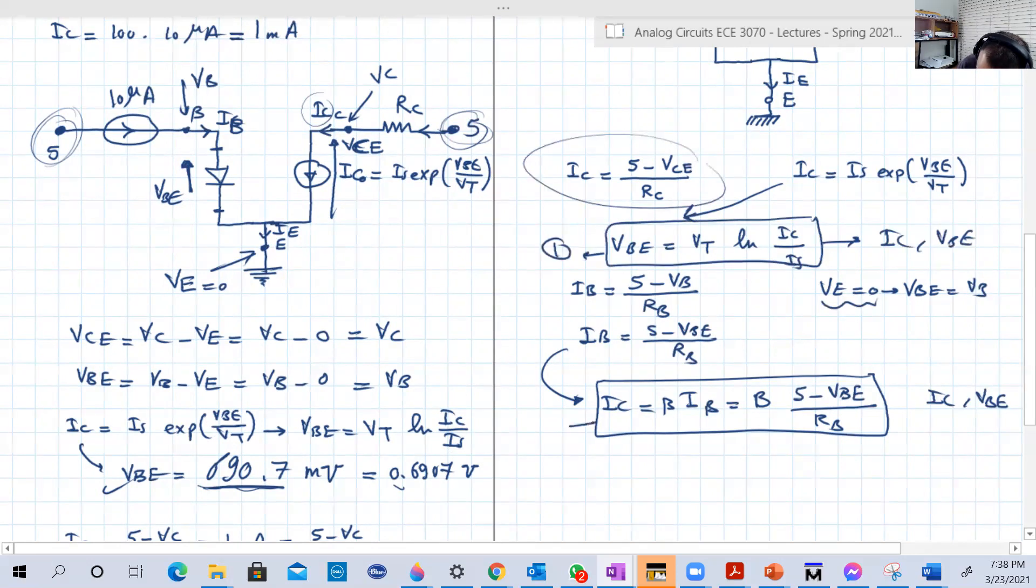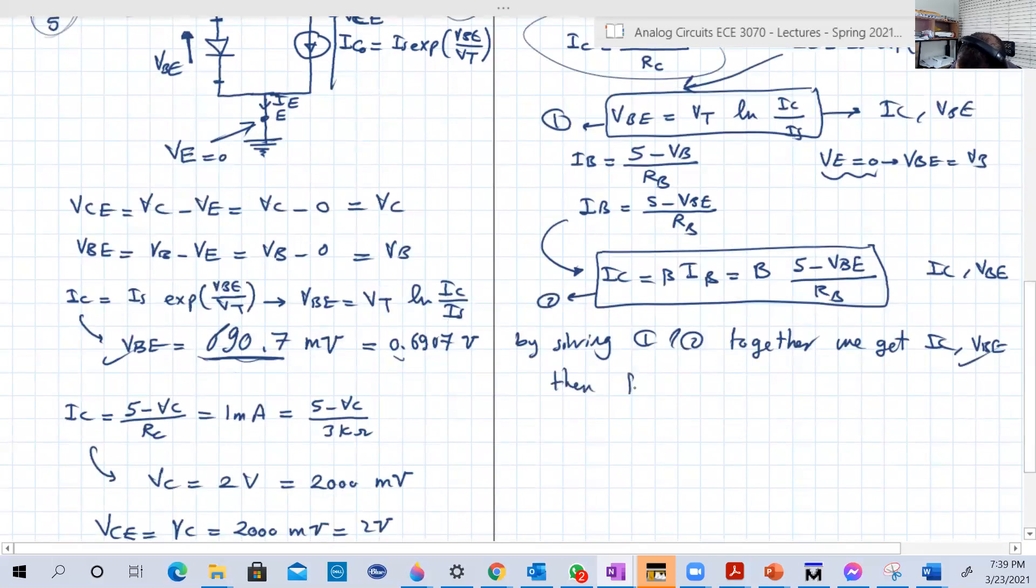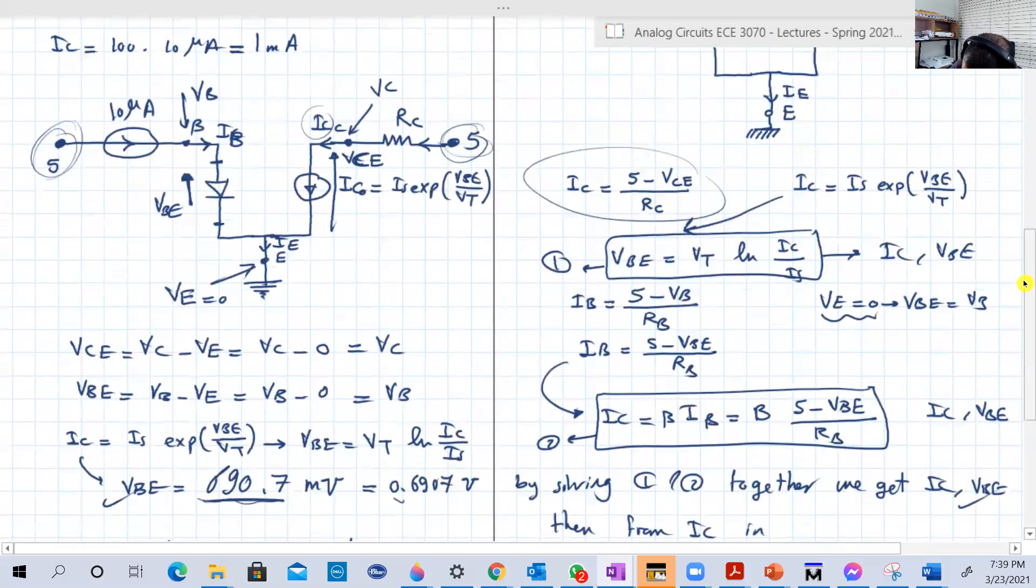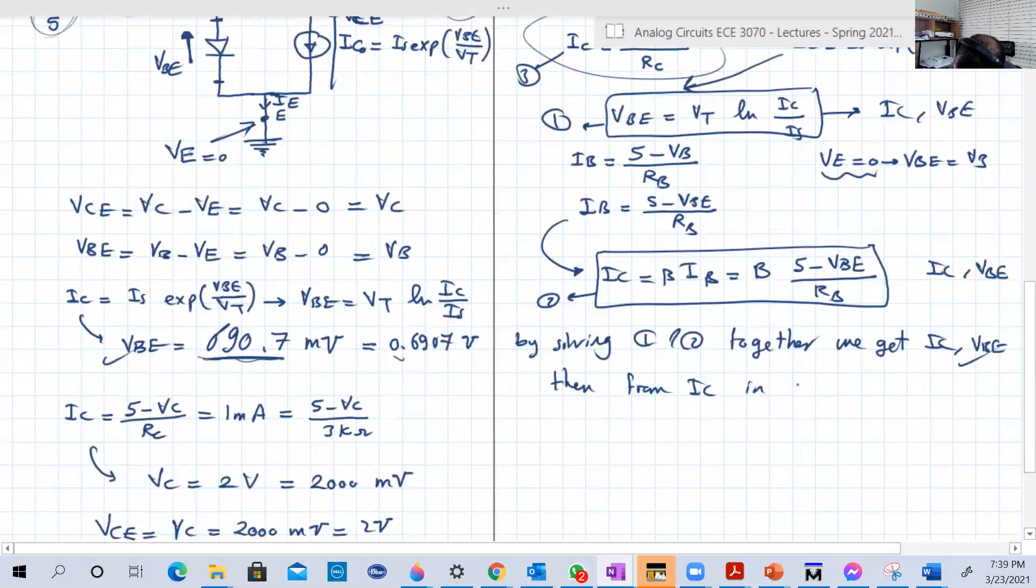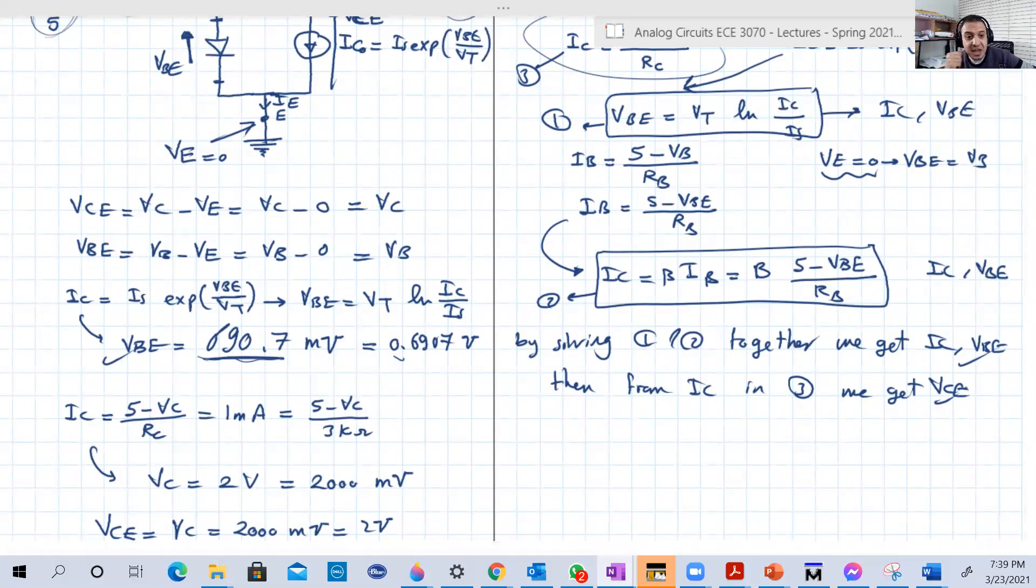So if we solve them together, we can get IC and VBE. Once we get IC, we can get VC, because remember, VC, again, since VE is equal to 0, VCE is also equal to VC. So let's call this one, let's call this two. By solving 1 and 2 together, we get IC and VBE. If VBE is our first unknown, then from IC in equation 3, let's call this 3, we get VC, VCE, our second unknown. That's basically the way to do it.